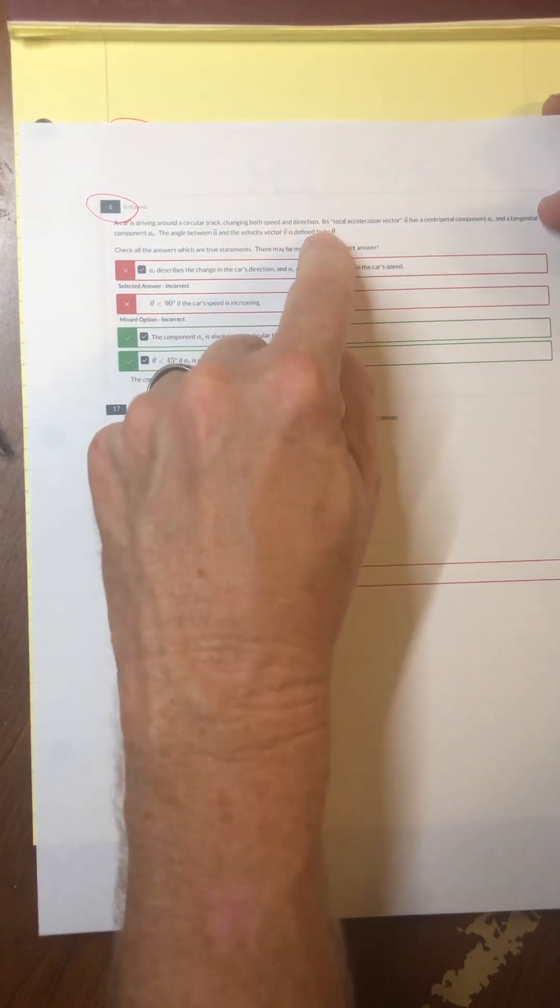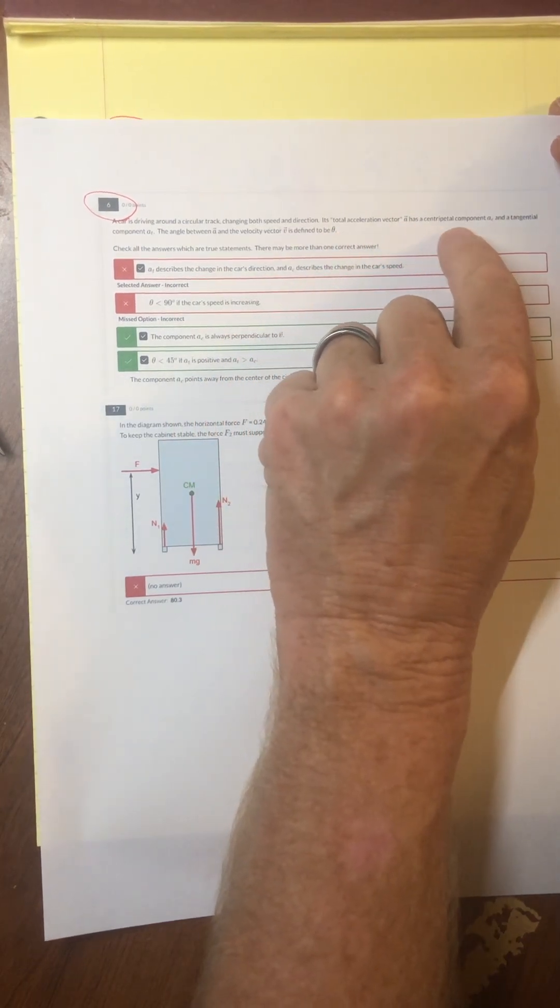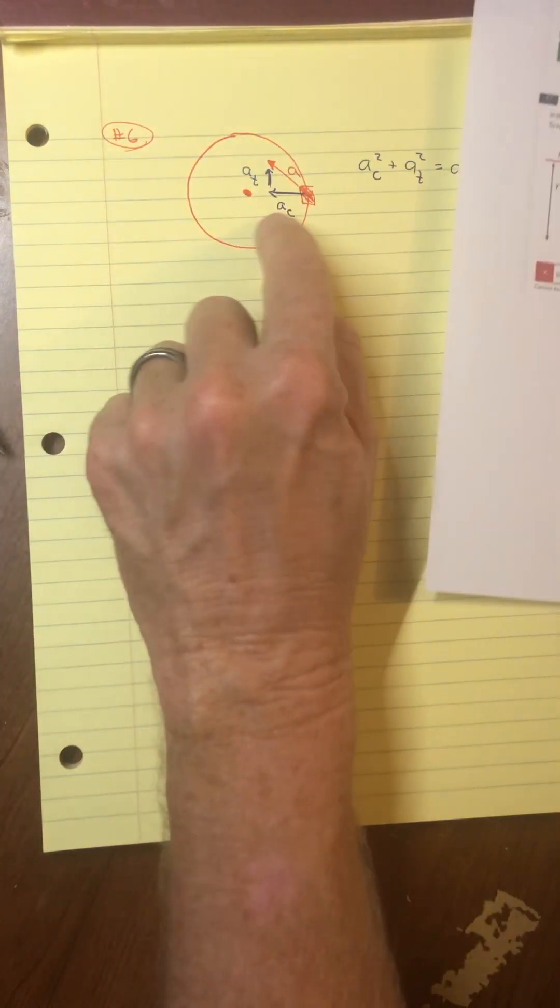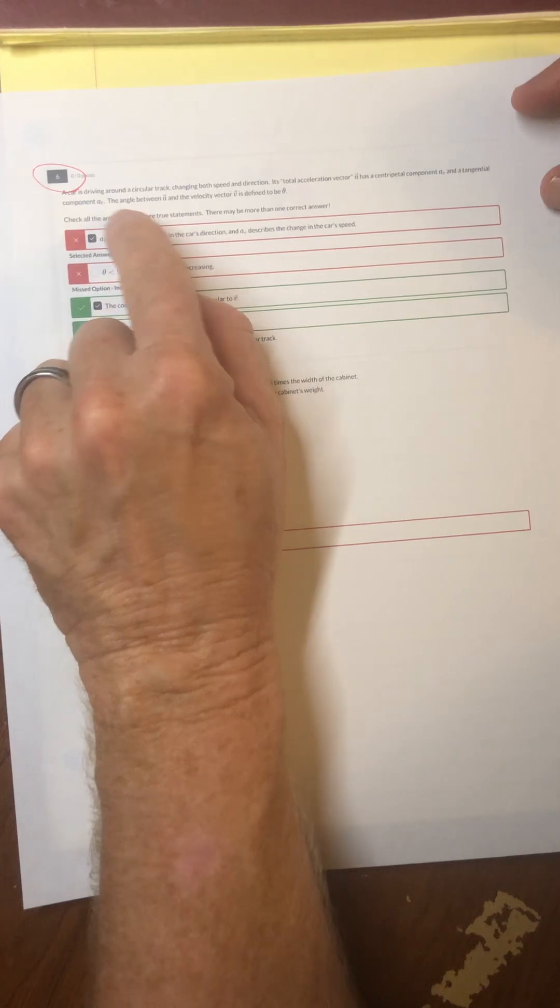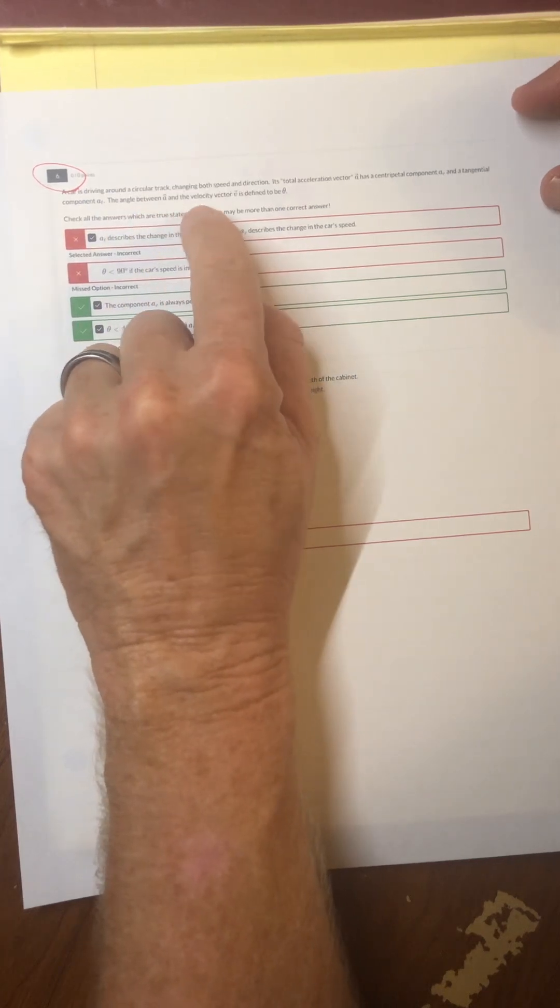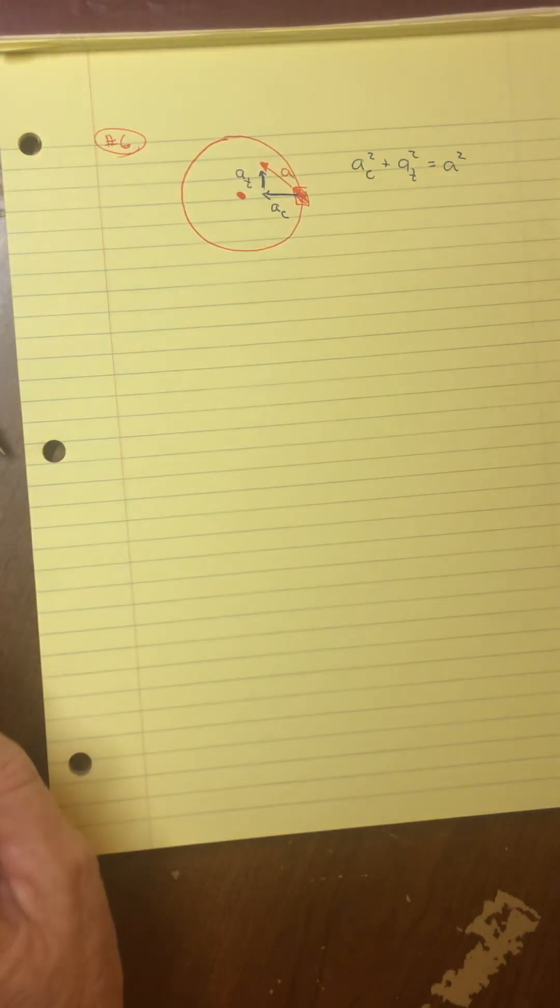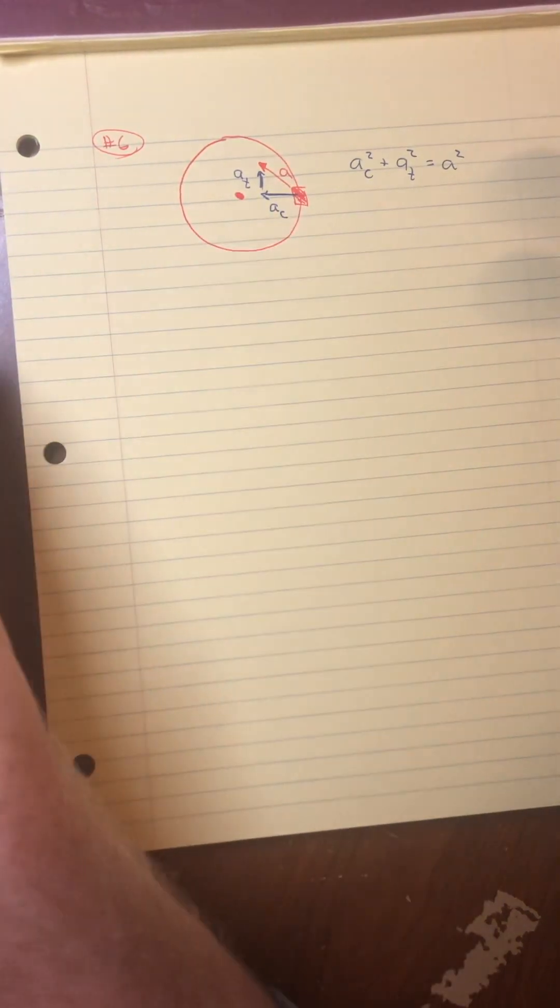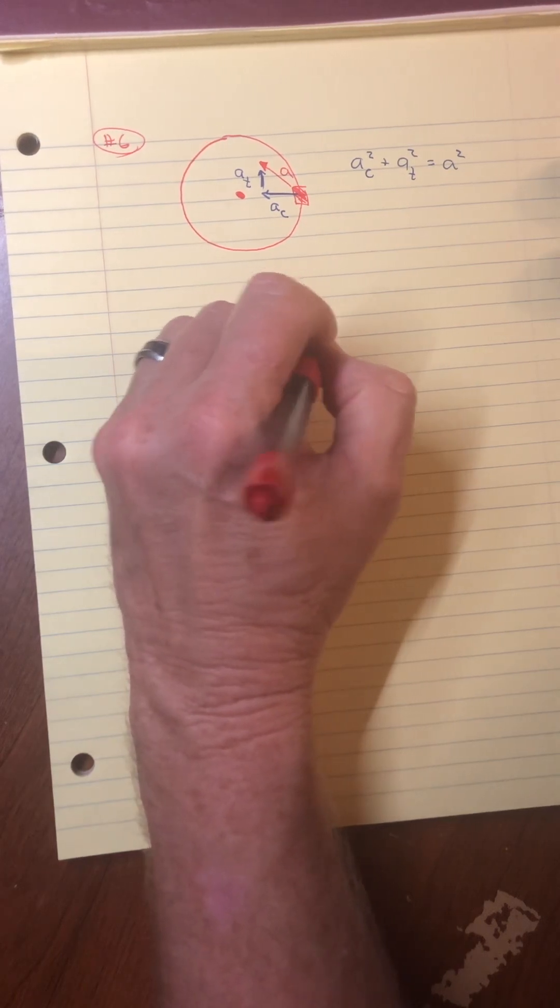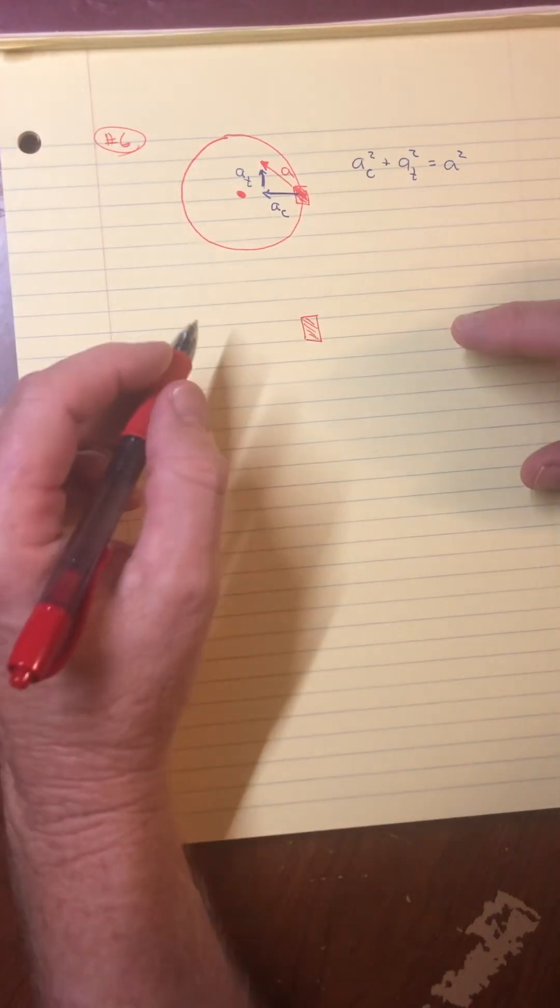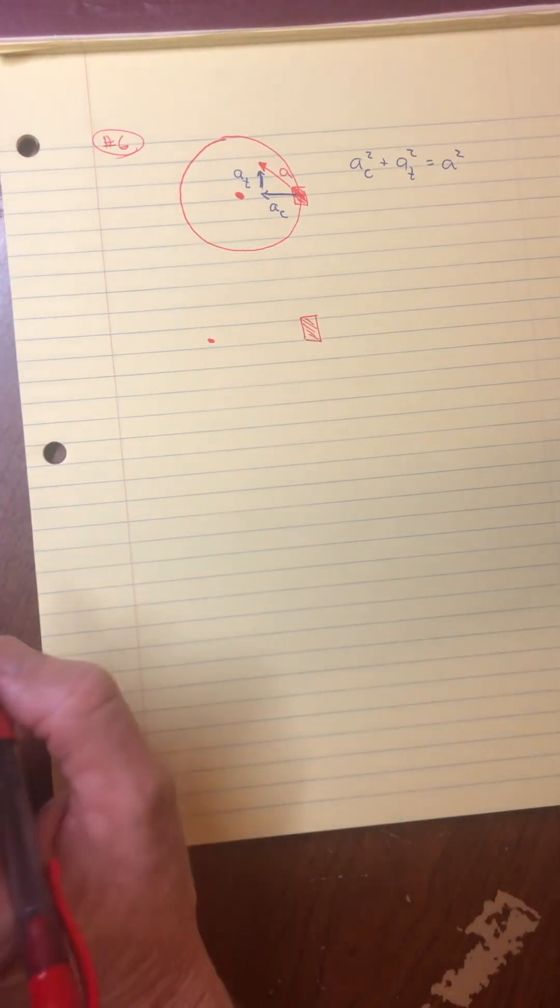Its total acceleration vector is the centripetal component. So that's what I was saying earlier. There's a centripetal component and a tangential component. The angle between the acceleration and the velocity vector is defined to be theta. So maybe my picture could be improved here. So let me just draw the car without the circle. I do like to always put a little dot to say where is the center of the circle.